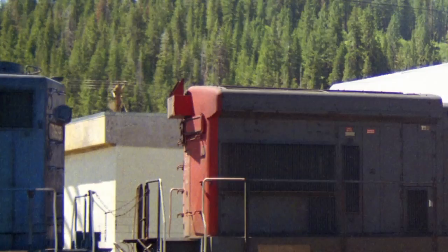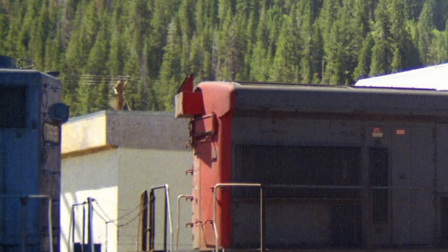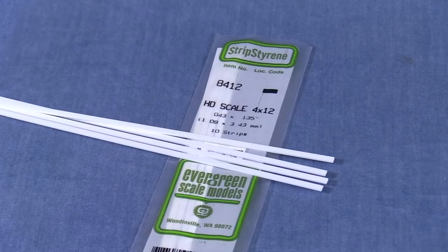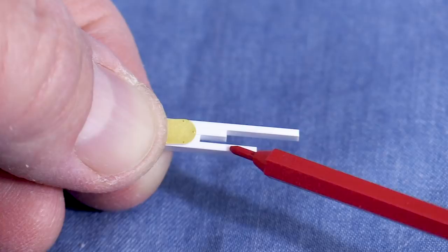I don't have any styrene thick enough for the entire depth of the box, so I'll need to laminate several pieces together. I'm guesstimating that the depth of the box front to back is about a scale foot. I have some HO scale 4x12 strip styrene on hand, so I'll use that. It turns out that four of these stacked together are the same height as the cover plate.